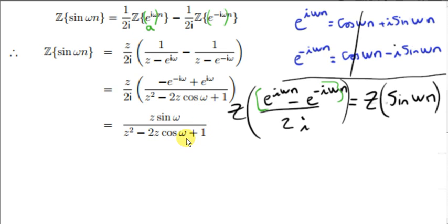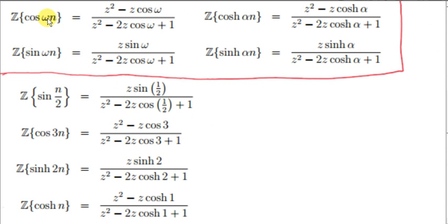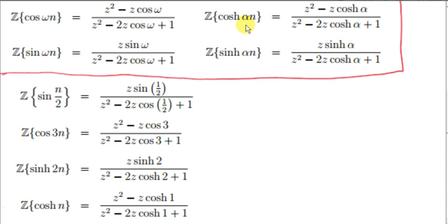Here is a summary of our results, which we can apply to examples. For sin(n/2), we compare to sin(ωn) with ω equal to one half and just plug in. For cos(3n), we plug 3 in for ω. For sinh(2n), we plug 2 in for alpha. And for cosh(n), we just plug 1 in for alpha to get our result.